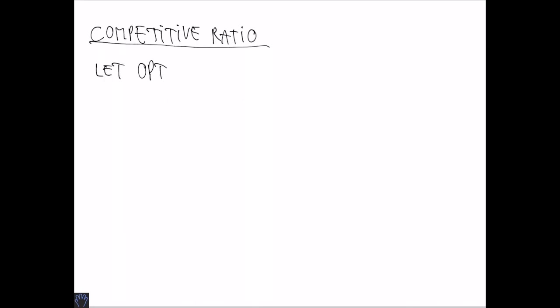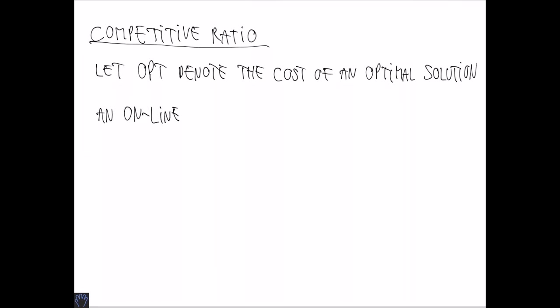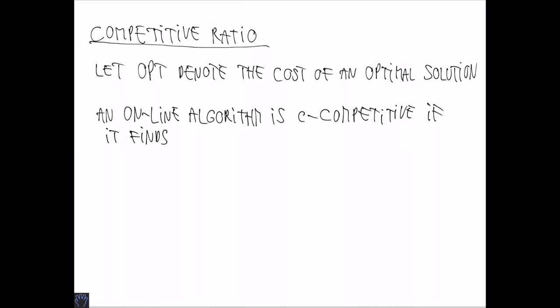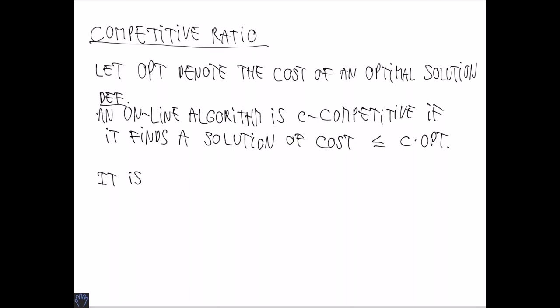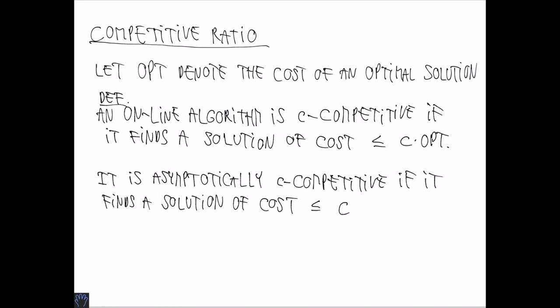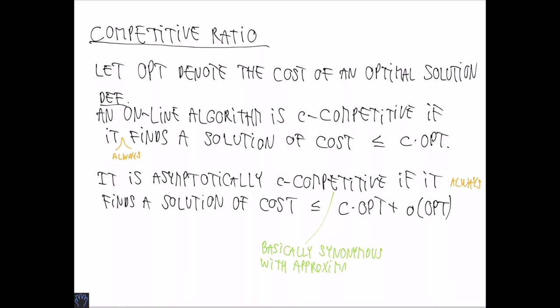The competitive ratio is a measure used to denote the quality of online algorithms. Let OPT denote the cost of an optimal solution. Then we say that an online algorithm is C-competitive if it finds a solution of cost at most C times OPT. There is also an asymptotic notion of competitiveness: an online algorithm is asymptotically C-competitive if it finds a solution of cost at most C times OPT plus something that is little-o of OPT. Here it's important that these are worst-case guarantees for any kind of input. Competitive here is synonymous with what we have called approximation factors previously in the course.